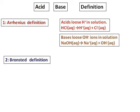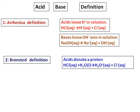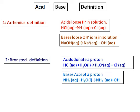The Arrhenius definition is not complete, so we have the Brønsted definition, which can apply to a wider range of acids and bases. According to the Brønsted definition, acids donate a proton — so anything which donates a proton is an acid. For example, HCl donates a proton to form H₃O⁺, making it an acid. For bases, Brønsted extended the definition to compounds without OH — for example, ammonia, which accepts a proton in water to form NH₄⁺, making it a base.